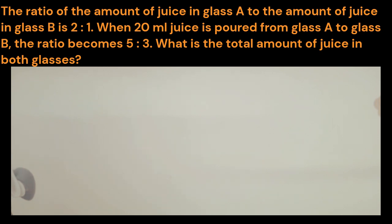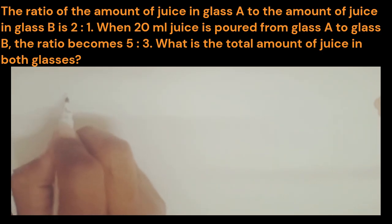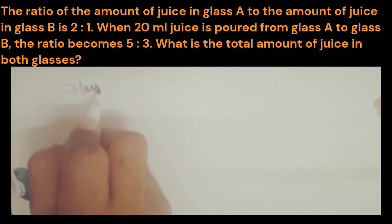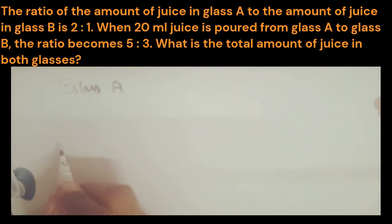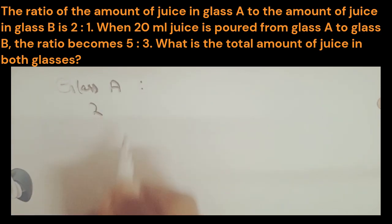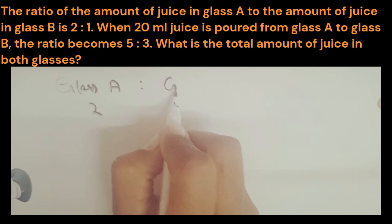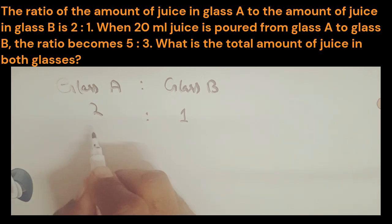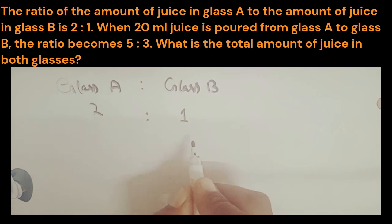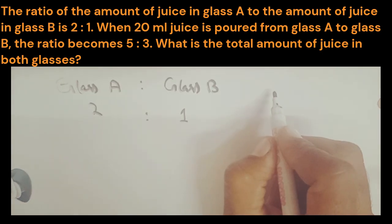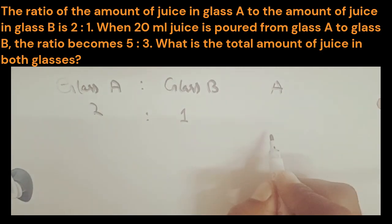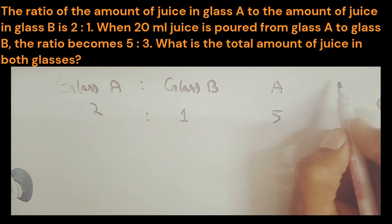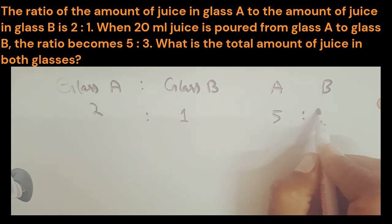First we write the data. Earlier, the juice in glass A to glass B was in the ratio 2:1. When 20 ml of juice was poured from glass A to glass B, the ratio changed — glass A became 5 units and glass B became 3 units.